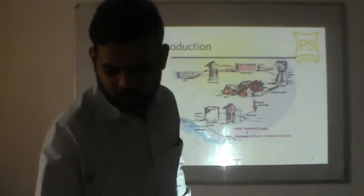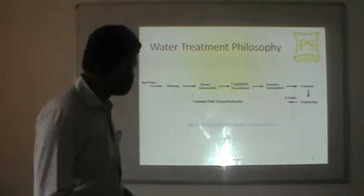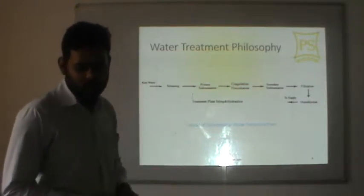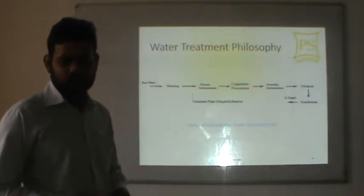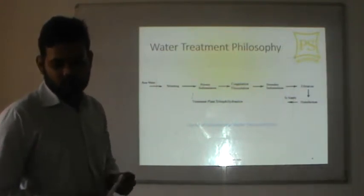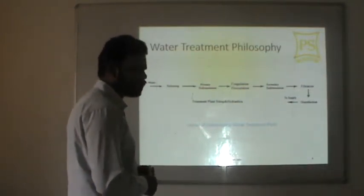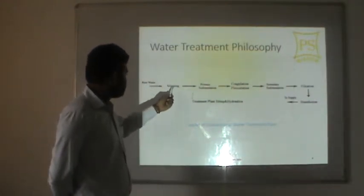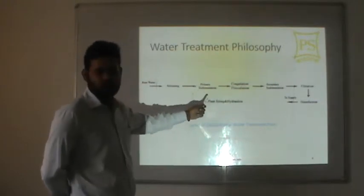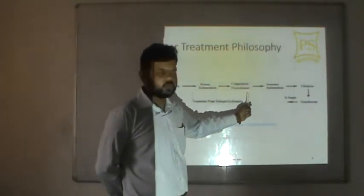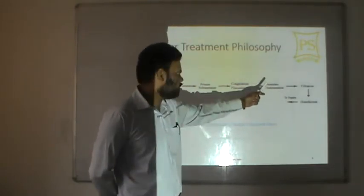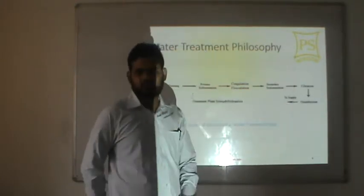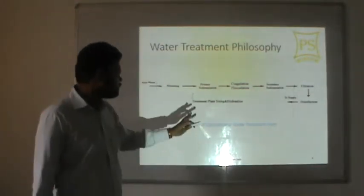The available water must be treated and purified before it can be supplied to the public for domestic, industrial, or any other uses. The extent of treatment required depends upon the characteristics and quality of the raw water. The treatment flow goes: screening, primary sedimentation, sedimentation with coagulation, secondary filtration, then disinfection, and finally water supply.